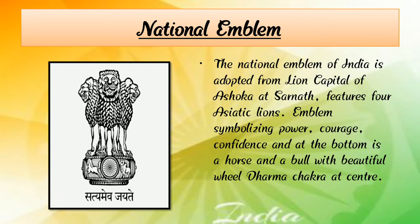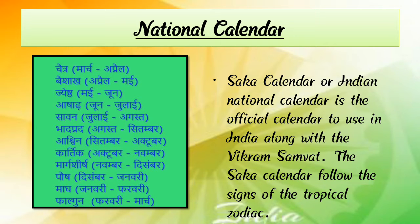Now next we are going to learn about the national calendar. The national calendar months are: Chaitra, Vaishakh, Jyestha, Ashadha, Shravana, Bhadra, Ashwin, Kartik, Margashirsha, Paush, Magha, and Phalguna. The Shakha calendar, or Indian national calendar, is the official calendar used in India along with the Vikram Samvat. The Shakha calendar follows the signs of the tropical zodiac.